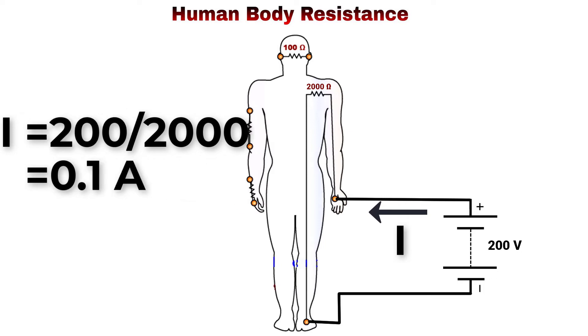But in case of 200V, the current that will pass through the body will be 100mA, which is so dangerous and could cause heart attack. So the voltage is the most dangerous factor.